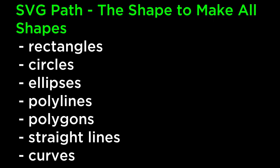The SVG path is the shape to make all shapes. W3 provides the following analogy: imagine that a pen is put on a piece of paper. The pen will touch the paper in only one point. The pen is moved to another point. The path between the two points can be a straight line or a curve. The curve can be an arc, a cubic bezier curve, or a quadratic bezier curve. In this way, we are able to draw any type of shape that we want in SVG.